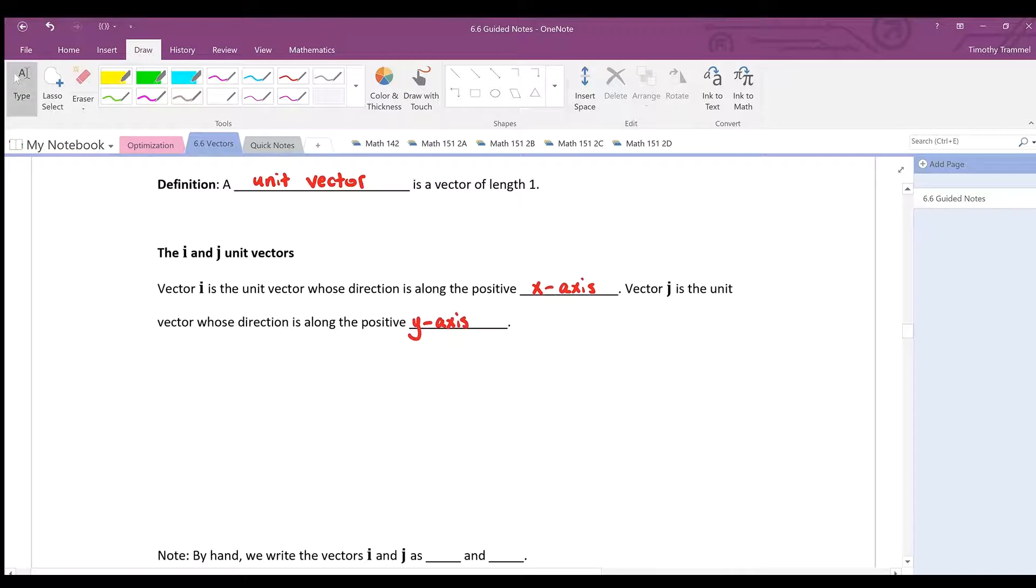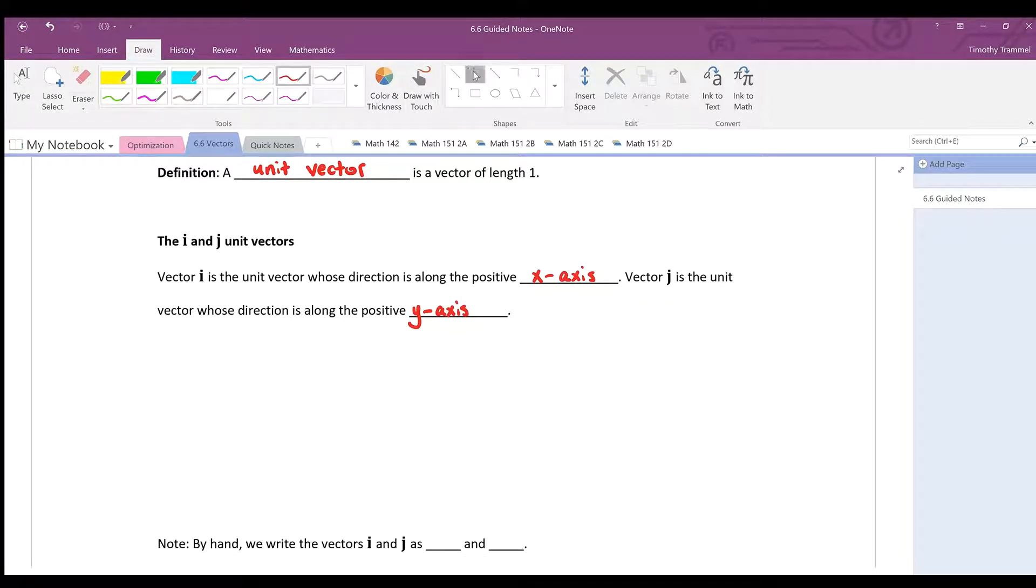Let's make a little sketch of this to see what this looks like. Here's our y-axis and here's our x-axis, and let's say we label one and one about right here.